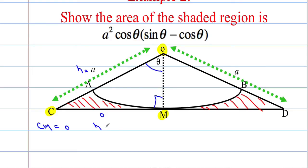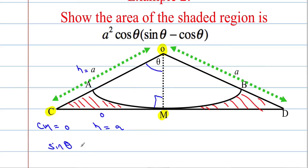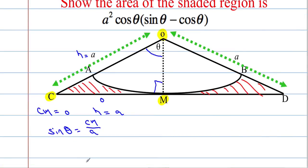The hypotenuse is equal to A and we've got theta. We need a trigonometric expression that involves the opposite and the hypotenuse — that's the sine of the angle. So sine of theta equals the opposite CM over the hypotenuse A. That means that A times sine of theta equals CM, which is our base. So I now know the base of triangle CM.